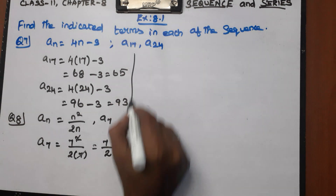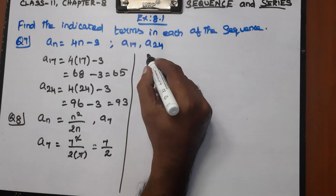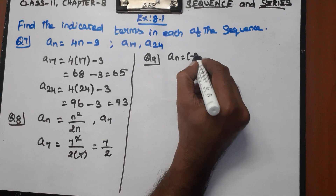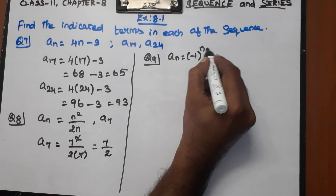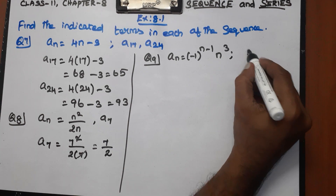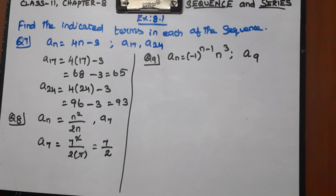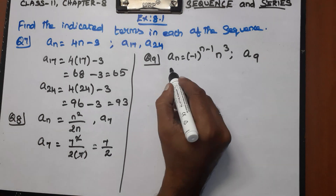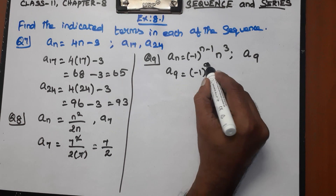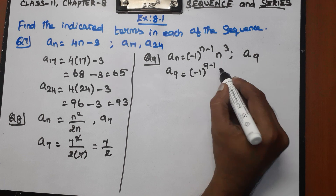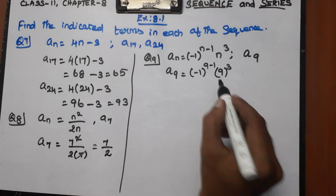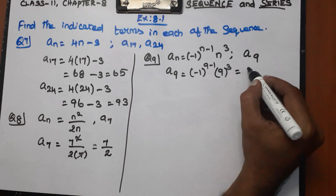Next is Question Number 9. The formula is an equal to minus 1 to the power n minus 1, into n cubed. We need to find a9. Substituting n equal to 9: minus 1 to the power of 9 minus 1, into 9 cubed. That is minus 1 to the power 8, into 9 cubed.